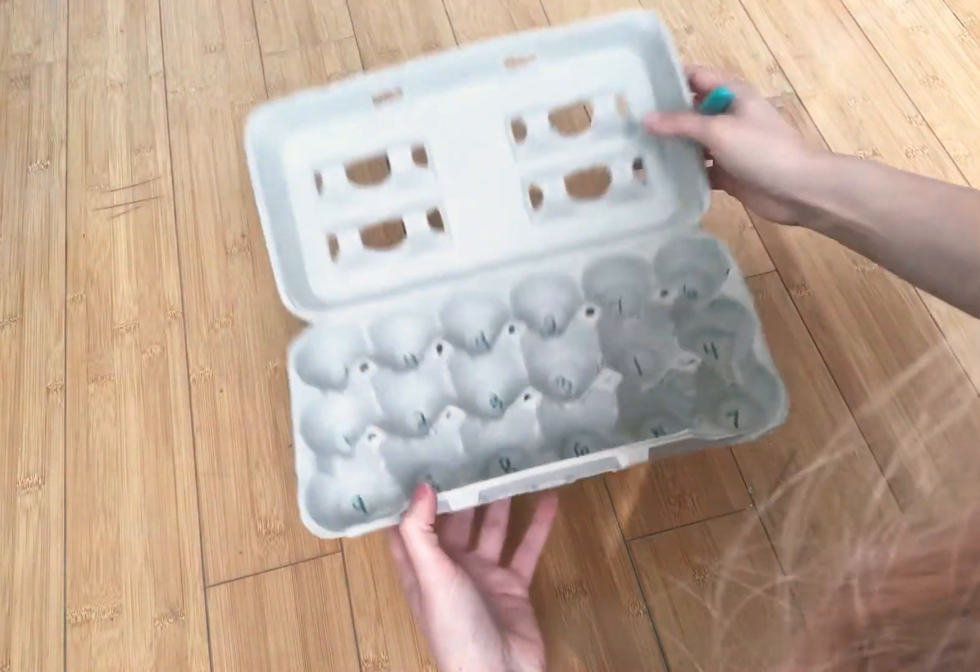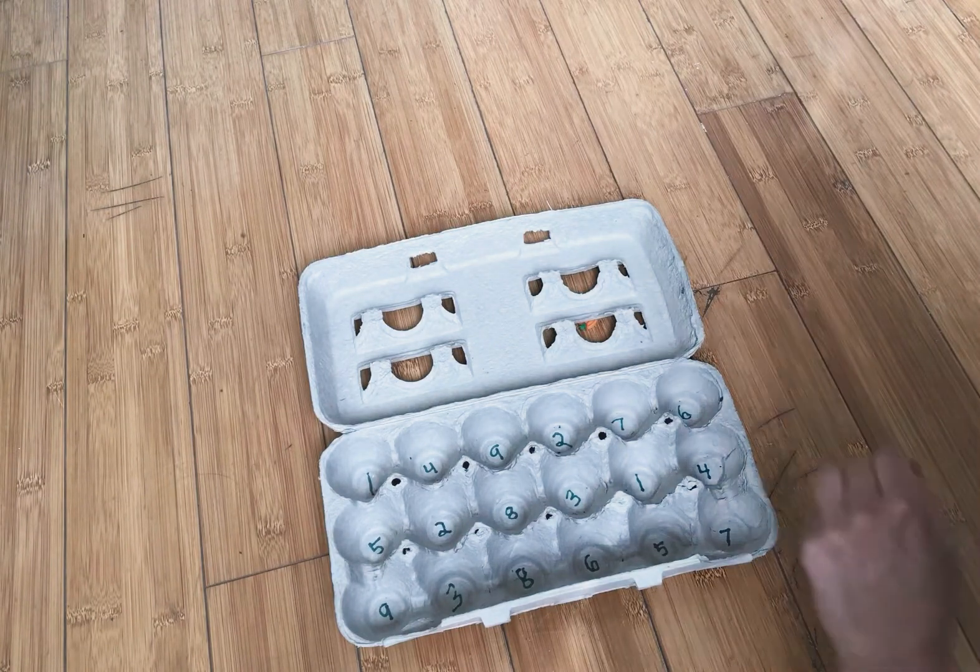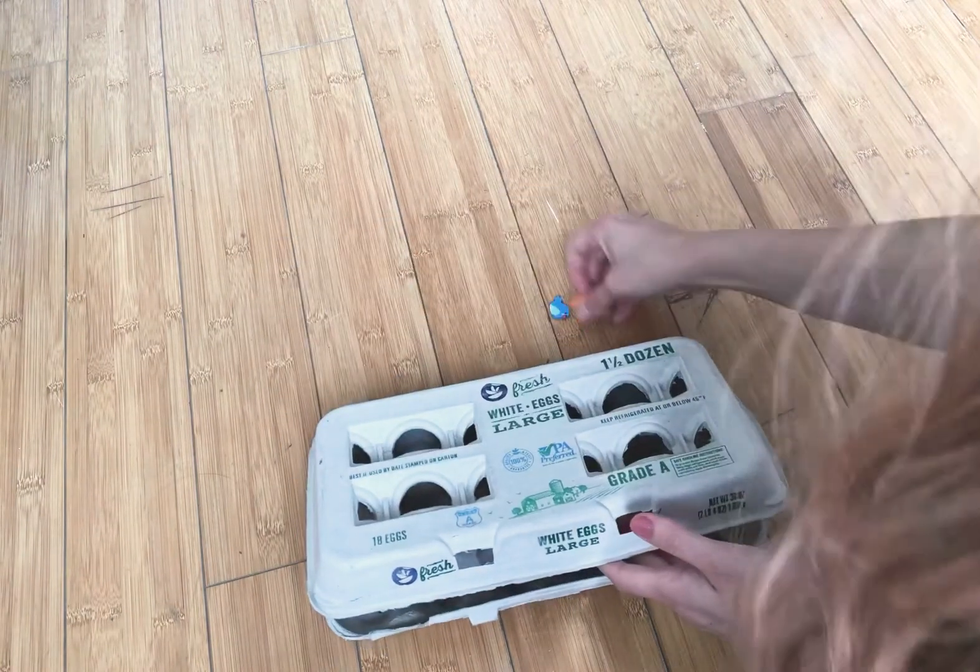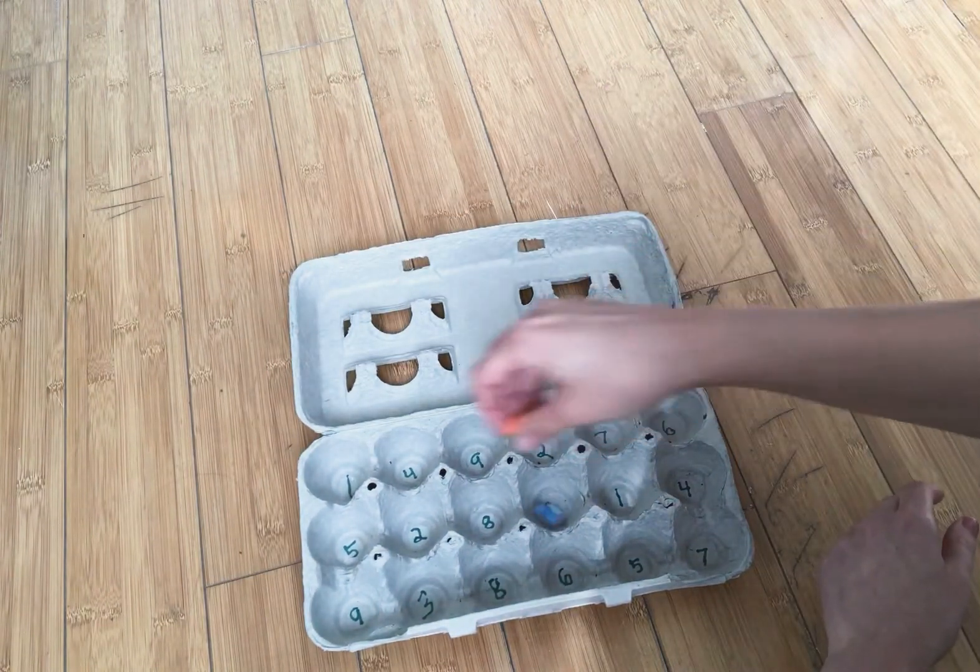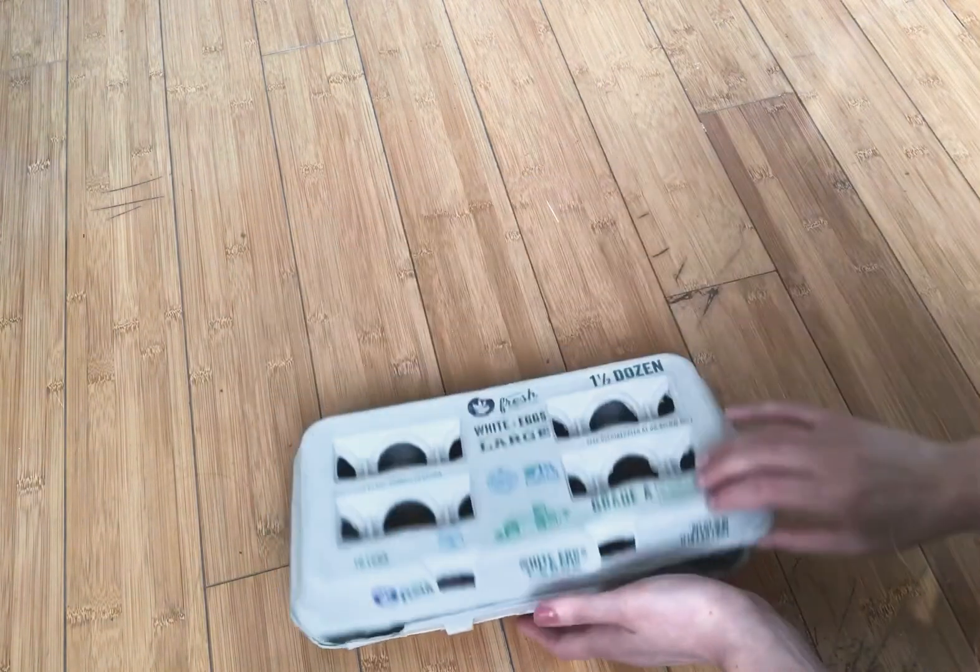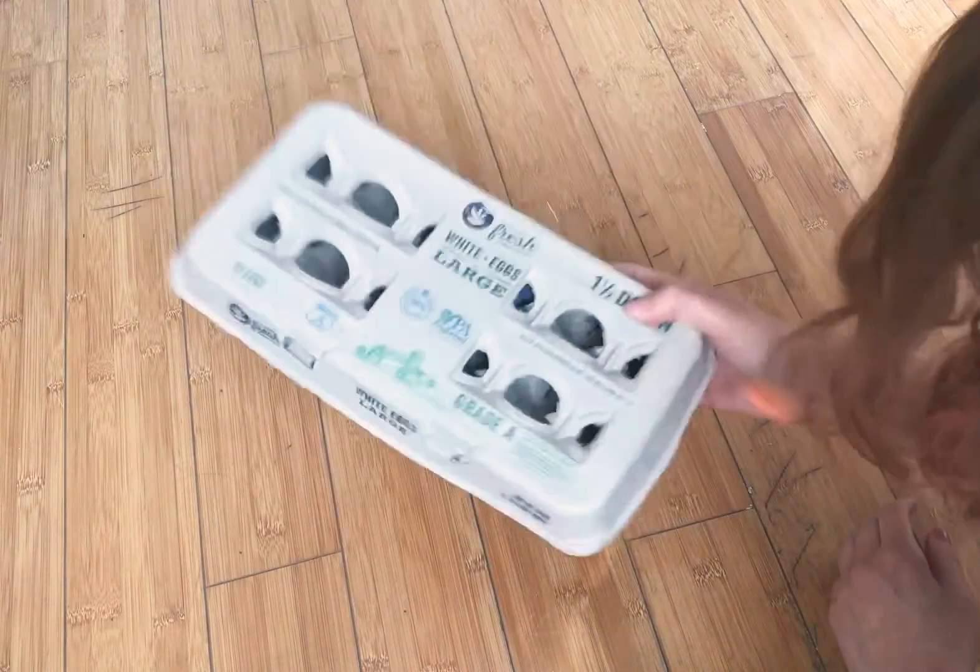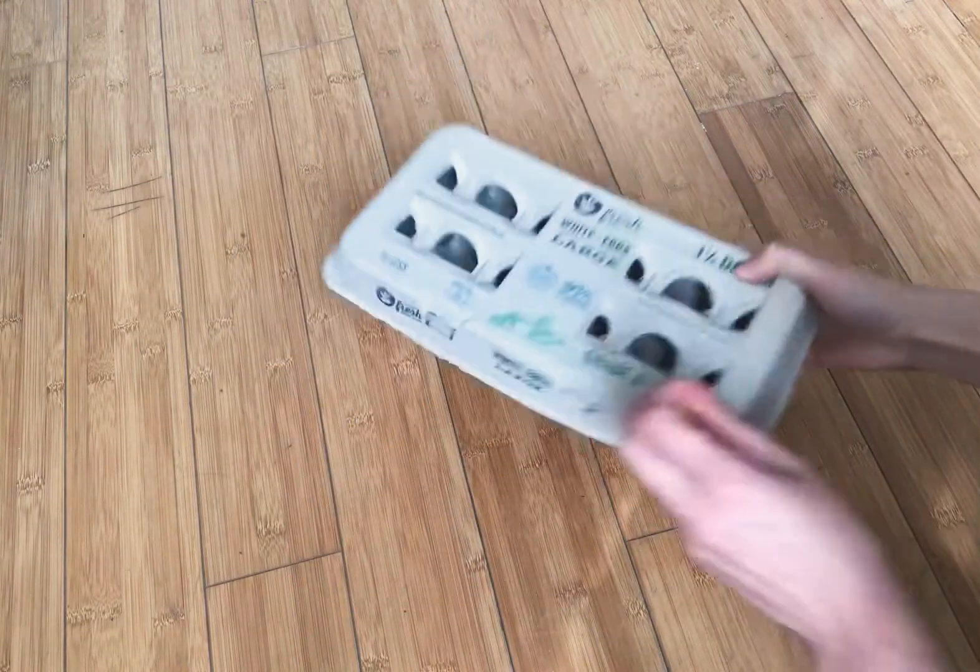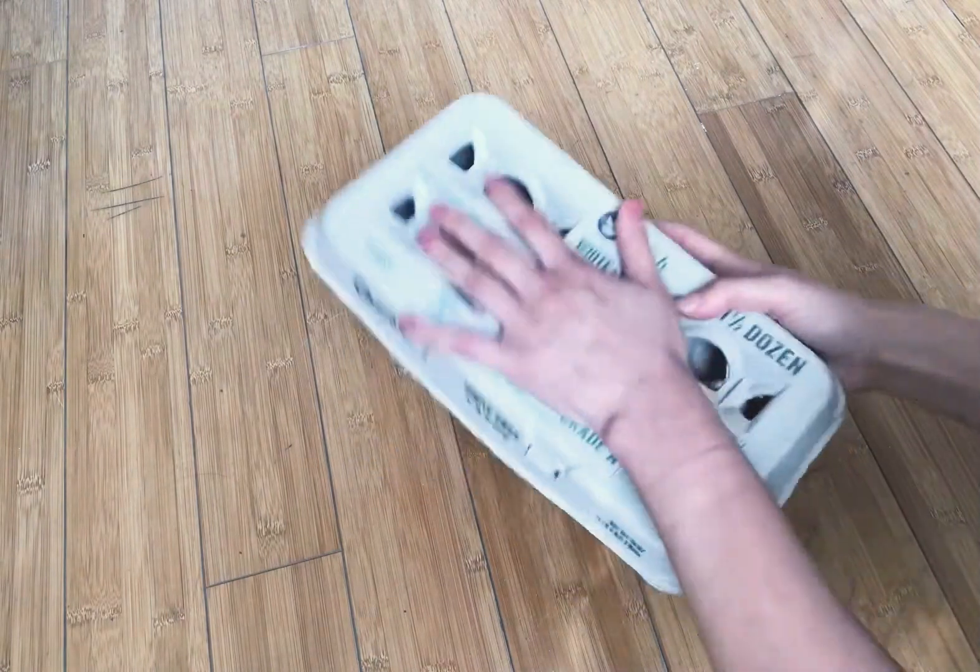Okay, so we're going to put our 2 erasers in, or caps or dice or whatever you have. So I'm just going to put them in here. Then what I'm going to do is close it, give it a little shake. Okay, and they might fall out, but you just put it back in. You can always tape the top too.